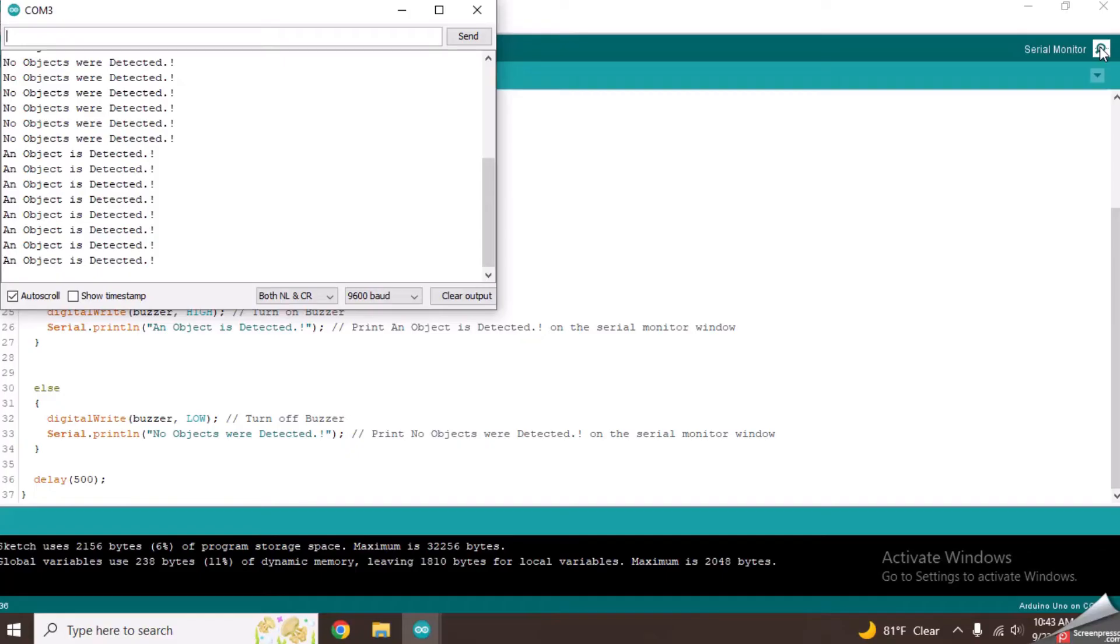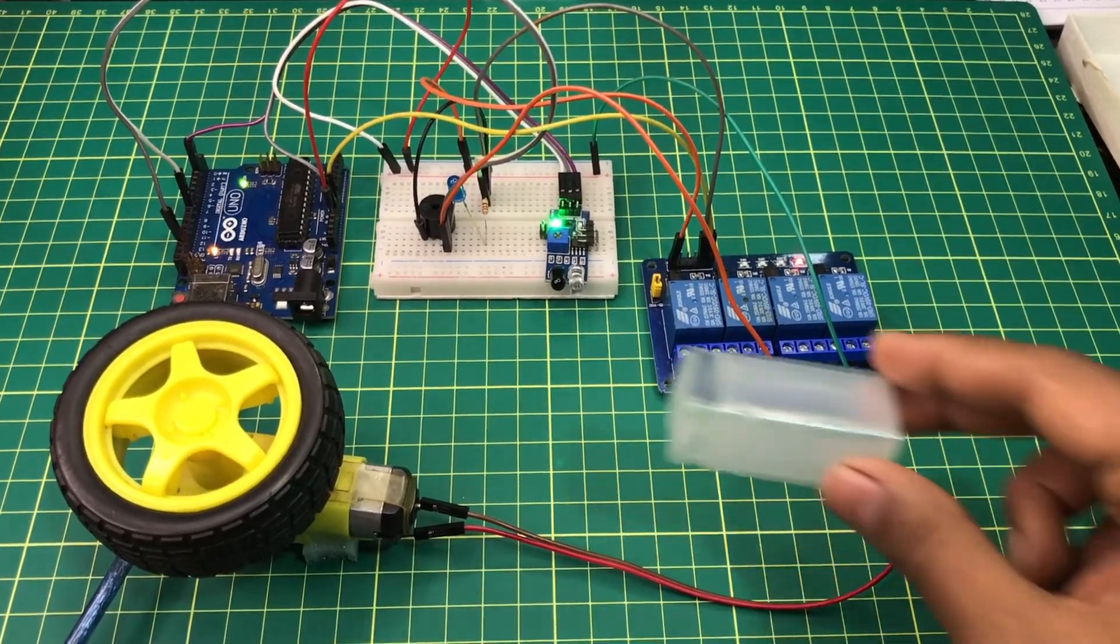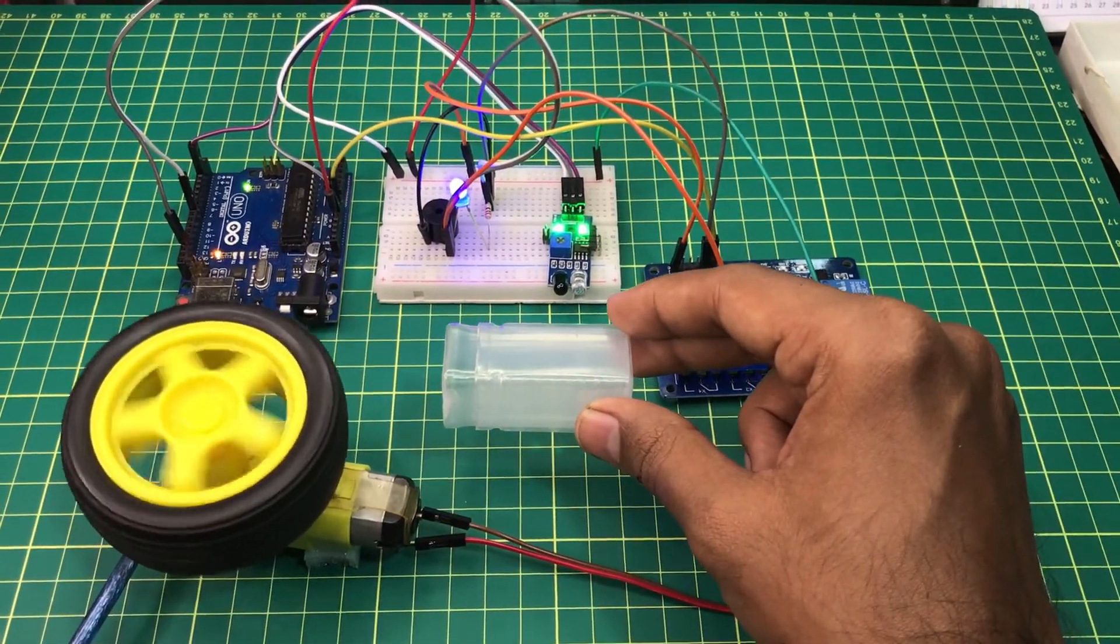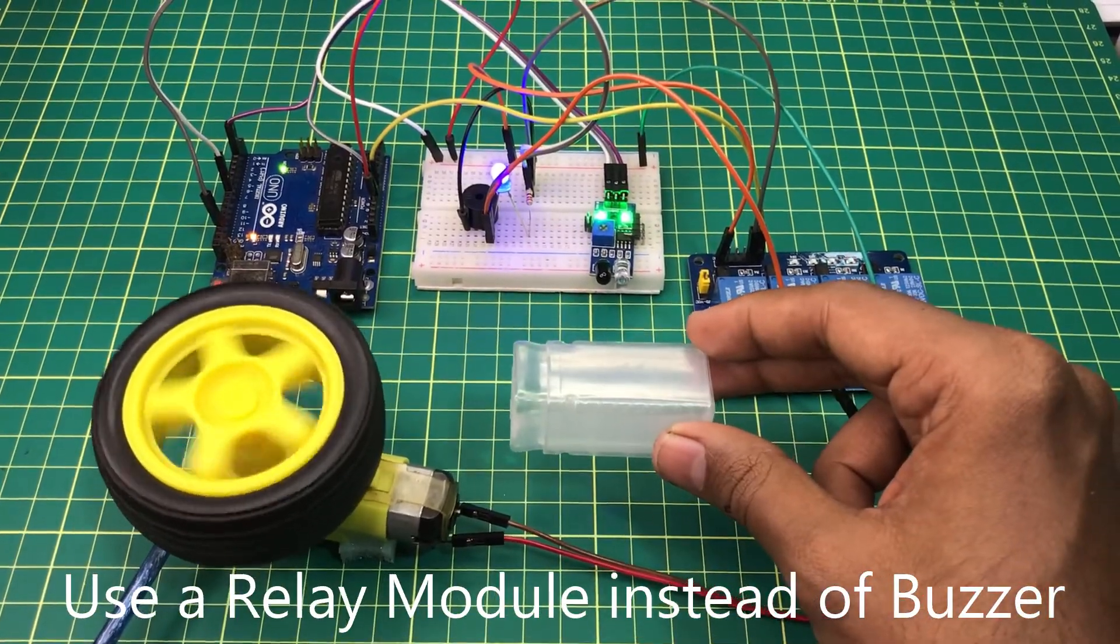We can modify this basic code to do various things. If you want to run motors or any other electrical appliances from this IR sensor, you can use a relay module instead of this buzzer.